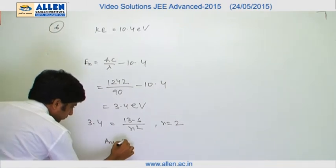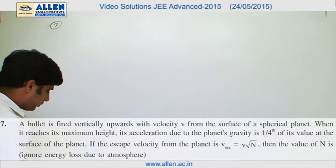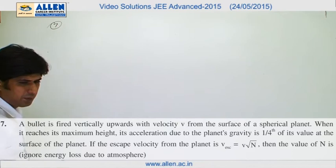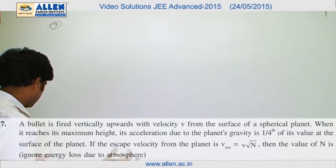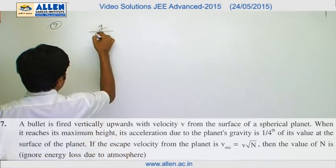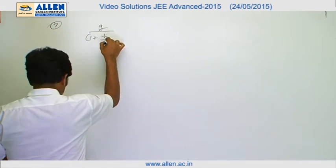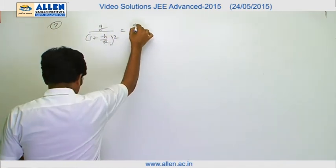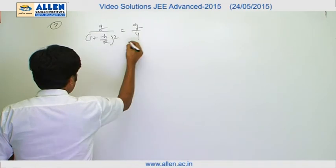In this question, if maximum height achieved by the particle is h, then we can say that g upon (1 + h/r) whole square equals to g by 4. From here we get h equals to r.